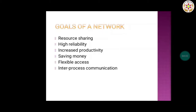The sixth goal is inter-process communication. If we are using a network in an organization, multiple devices are connected so that data and documents produced by operations in the organization can be shared easily using that network. For example, using the internet we can share documents via Gmail or different email applications, and send information to another entity.